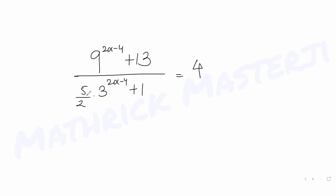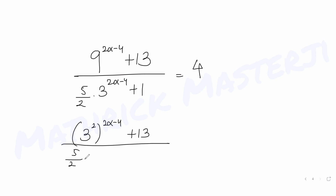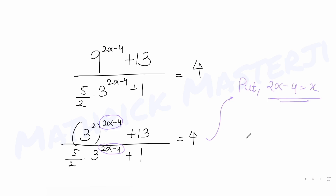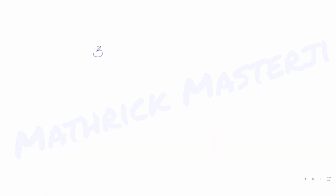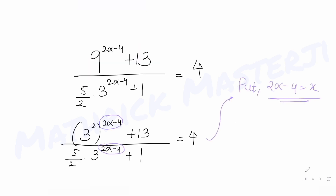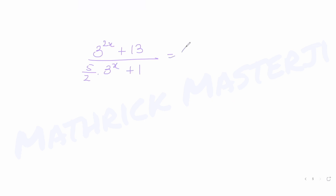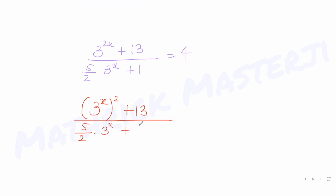Writing 9 as 3², the expression becomes (3^(2(2α−4)) + 13) / (5/2 · 3^(2α−4) + 1) = 4. I substitute x = 2α−4, so it becomes (3^(2x) + 13) / (5/2 · 3^x + 1) = 4. Then writing 3^(2x) as (3^x)², the equation becomes ((3^x)² + 13) / (5/2 · 3^x + 1) = 4.